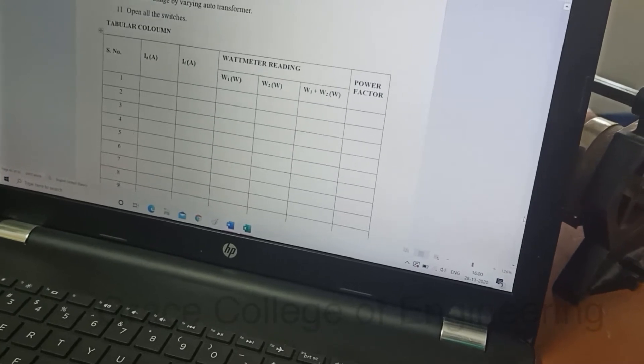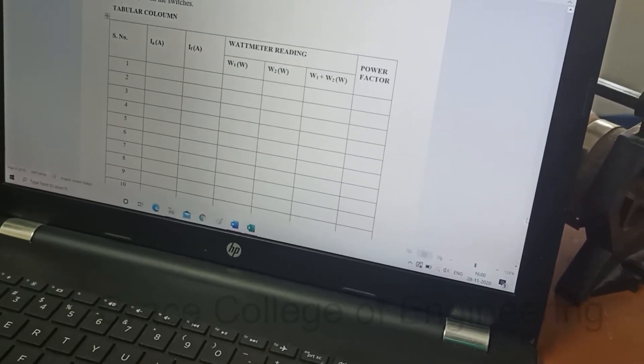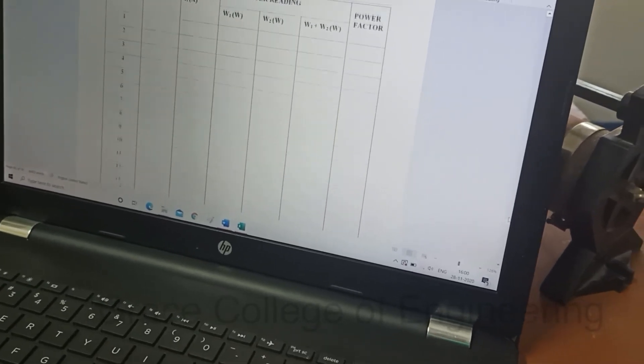This is the tabular column of this experiment. We want to take the corresponding readings and note it, then draw the curves.